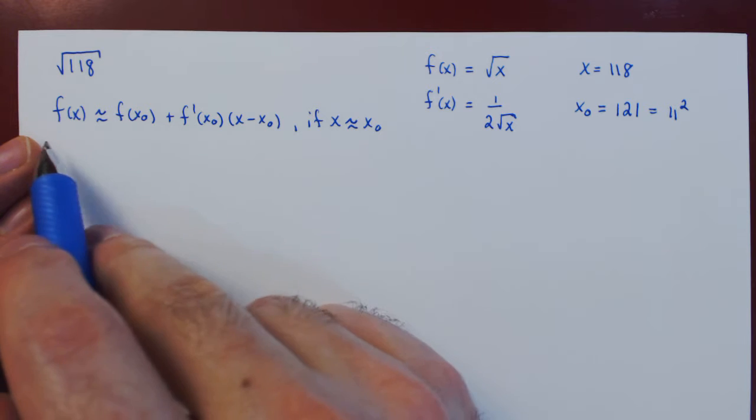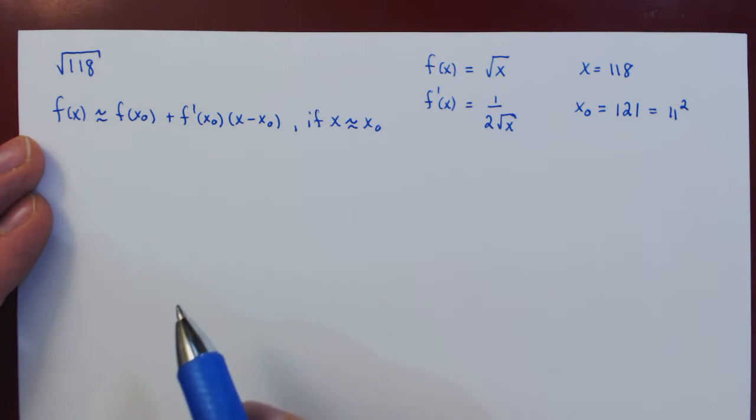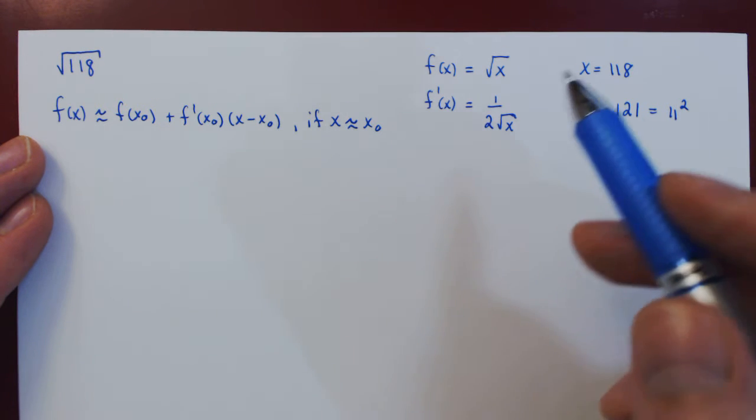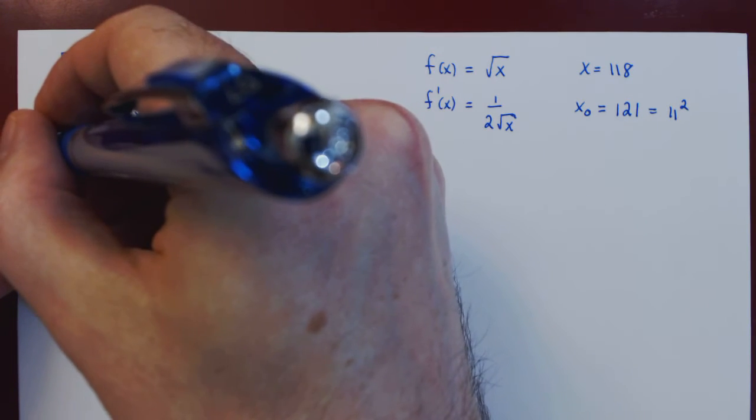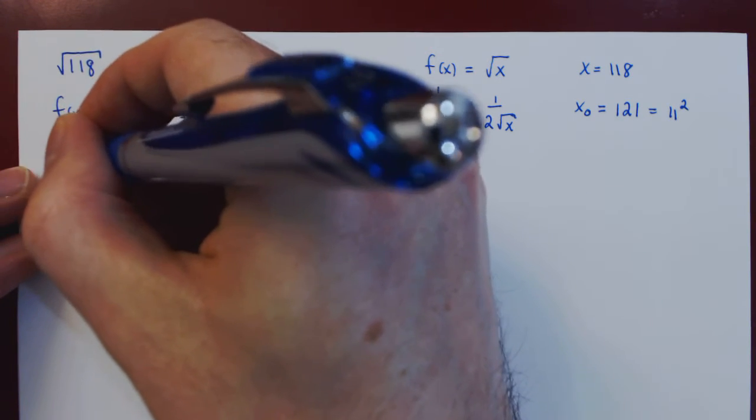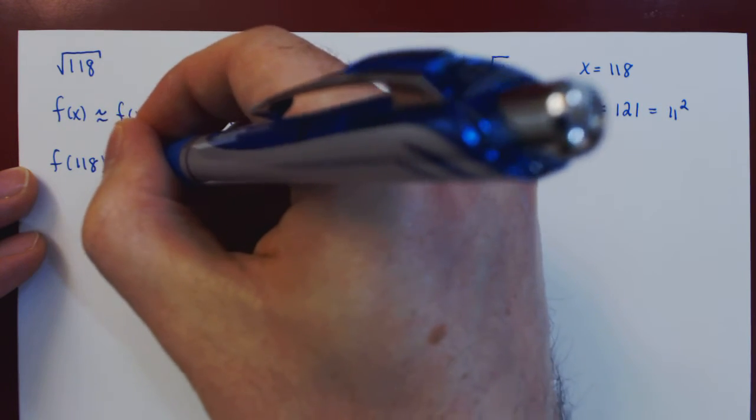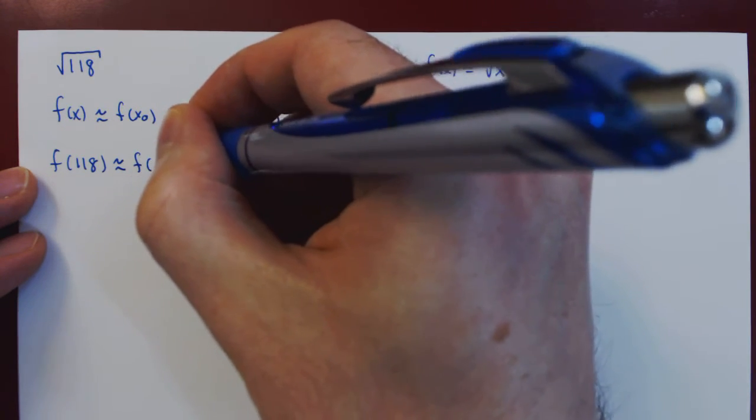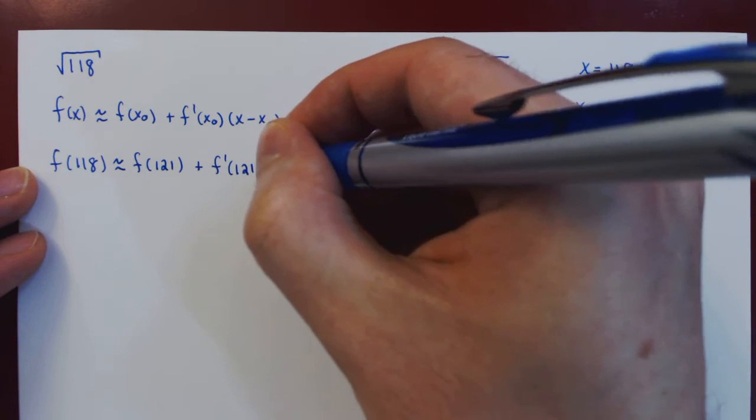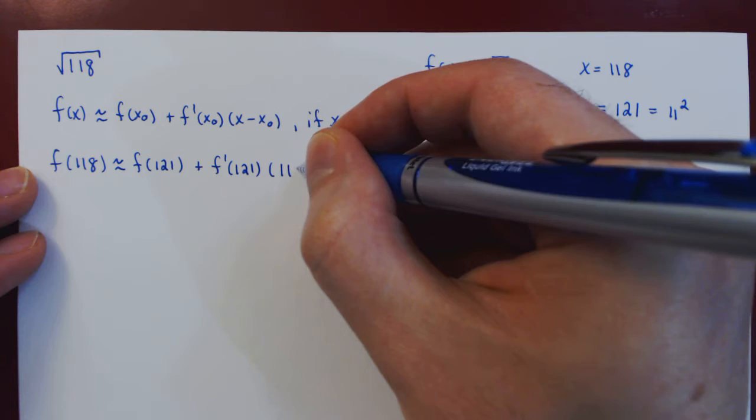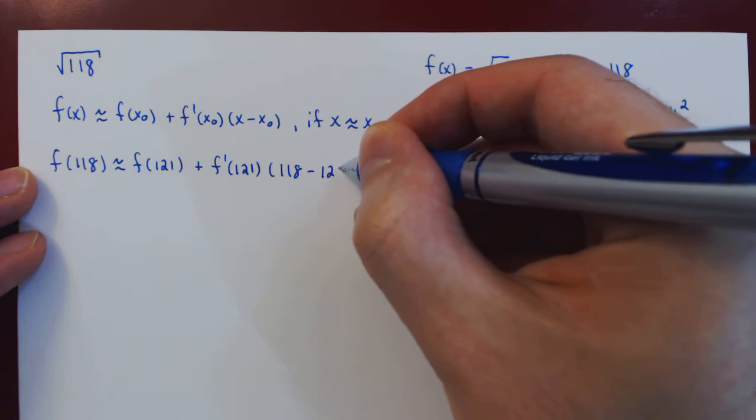So we can now replace, in the result of linear approximation, the value of x and the value of x₀. What we now have is f(118) is approximately f(121) plus the derivative at 121 times 118 minus 121.